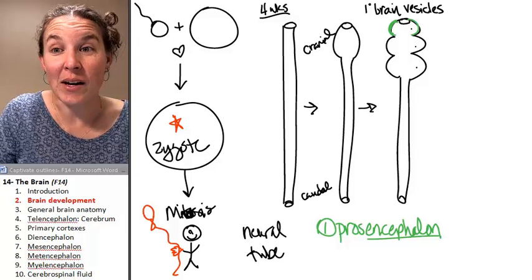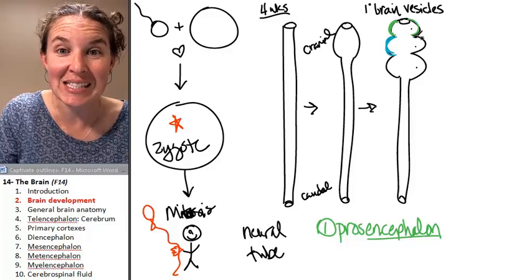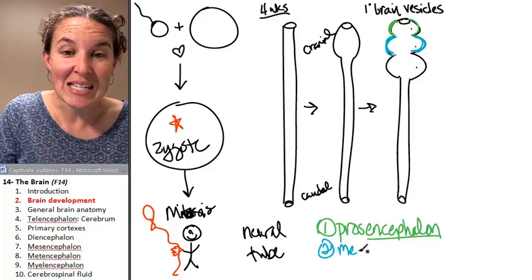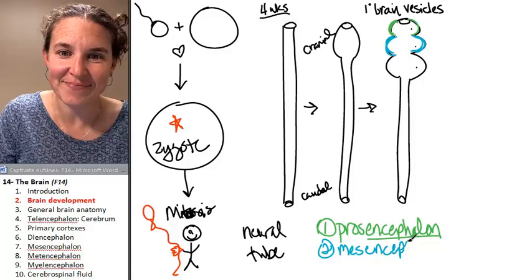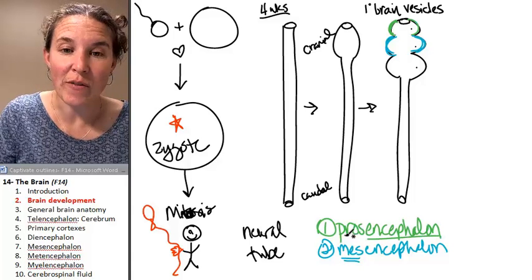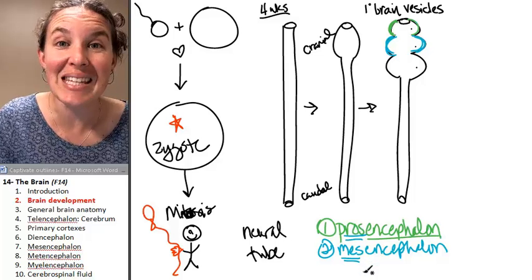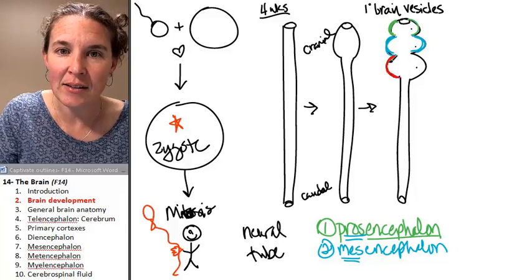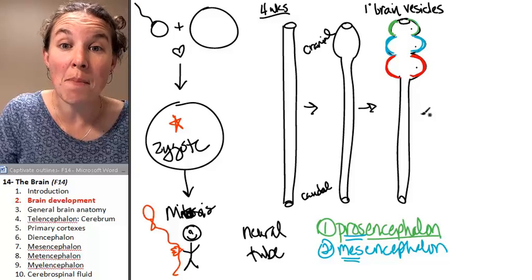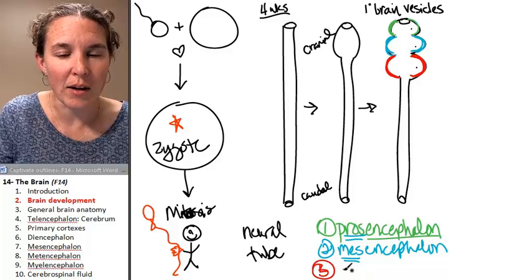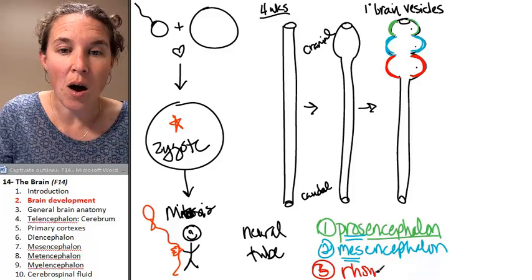And the second one is called the mesencephalon. So we have the prosencephalon, the mesencephalon, and then we have one more. And this guy is called the rhombencephalon.